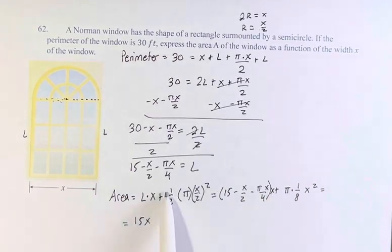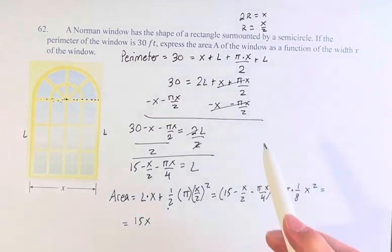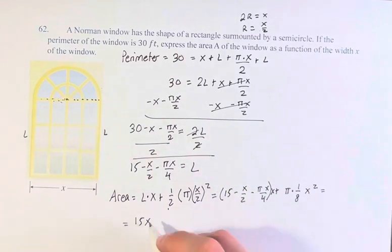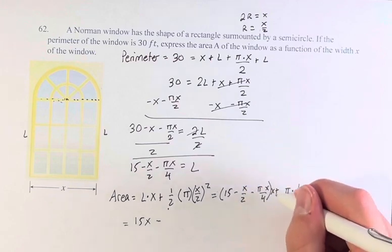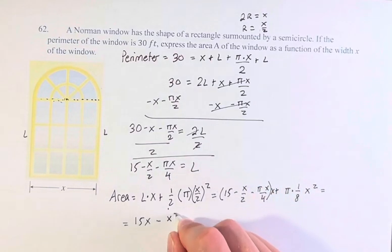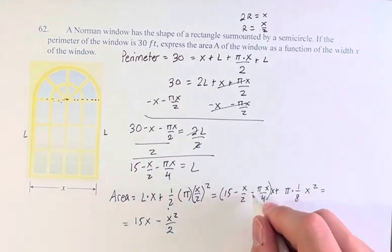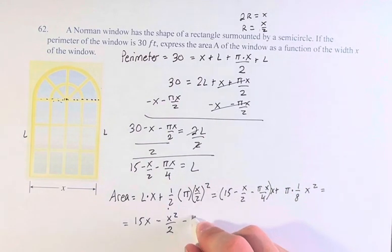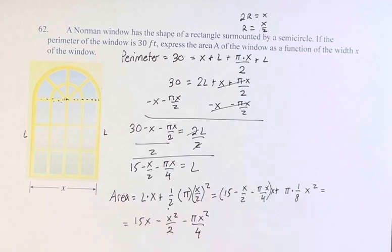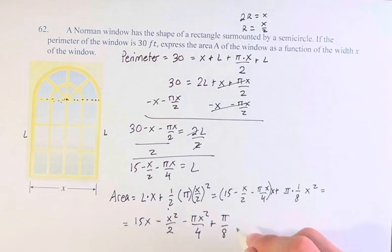So this is L times x is this thing right here. So now we're distributing 15 times x, minus x times x over 2 is x squared over 2, minus pi x times x is pi x squared over 4, plus pi times 1 eighth is pi over 8 x squared.